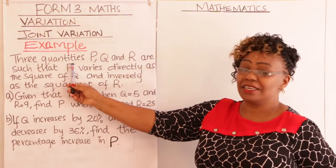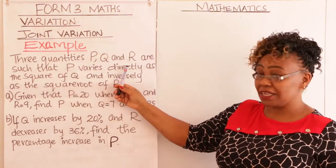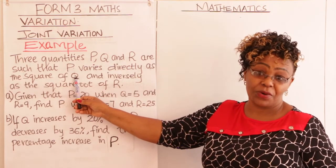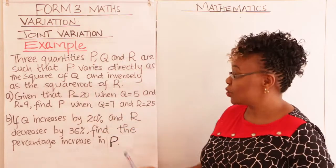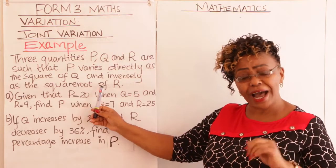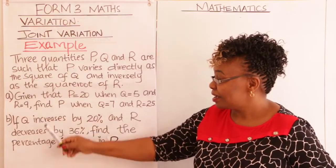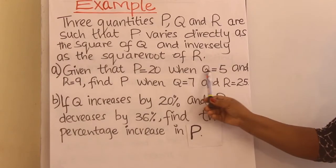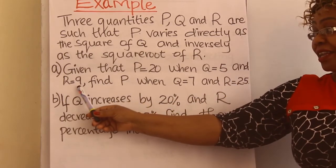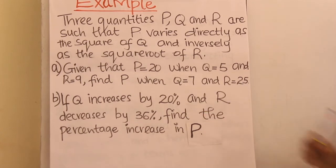Three quantities P, Q and R are such that P varies directly as the square of Q and inversely as the square root of R. Part A: Given that P is 20 when Q is 5 and R is 9, find P when Q is 7 and R is 25.